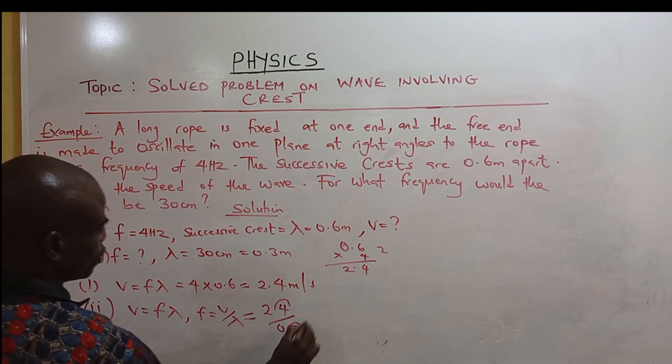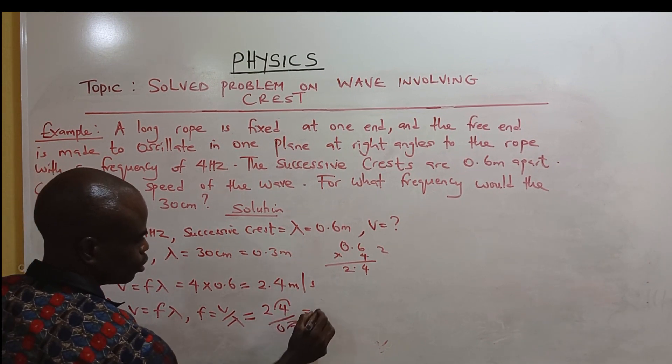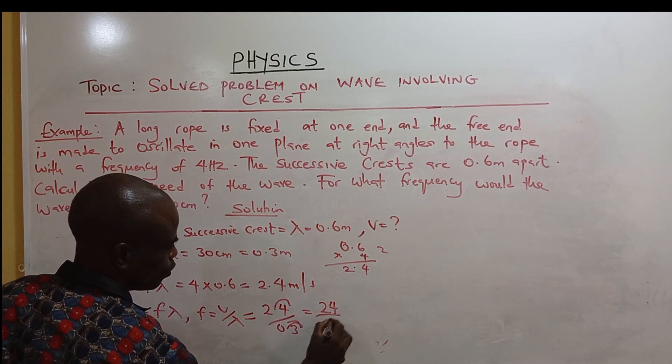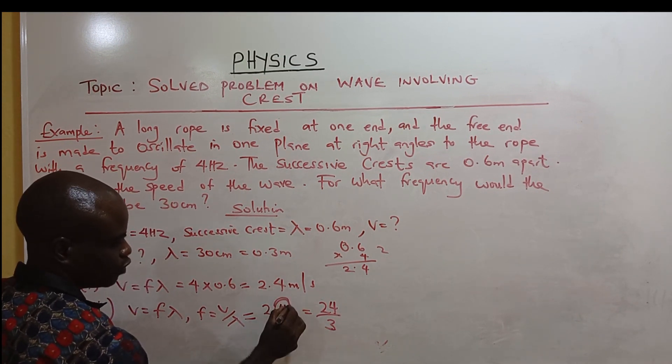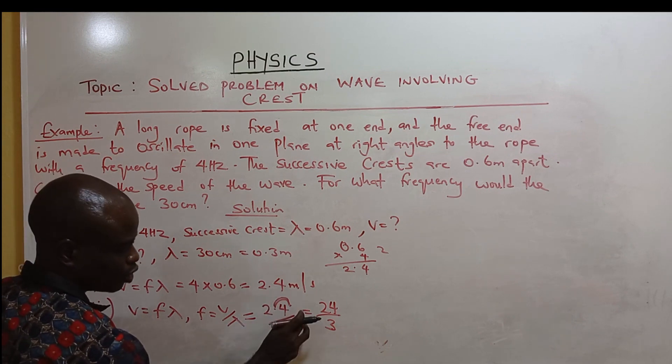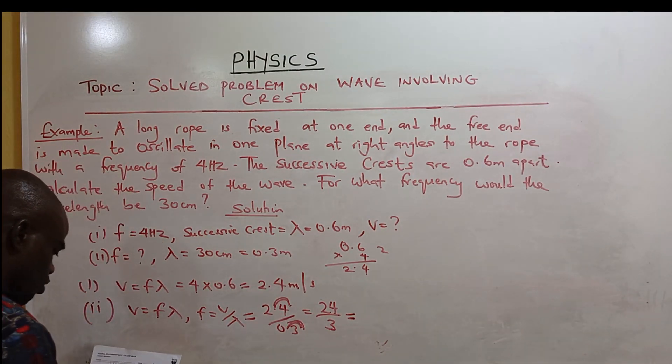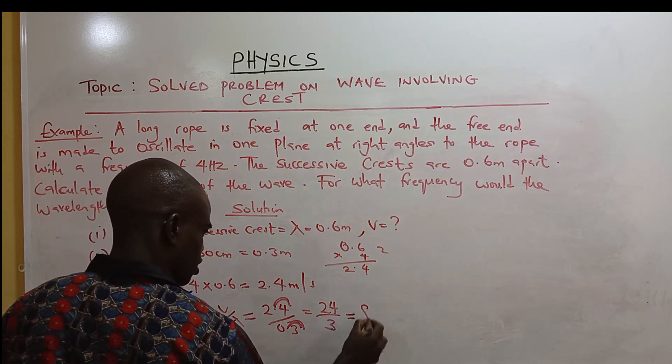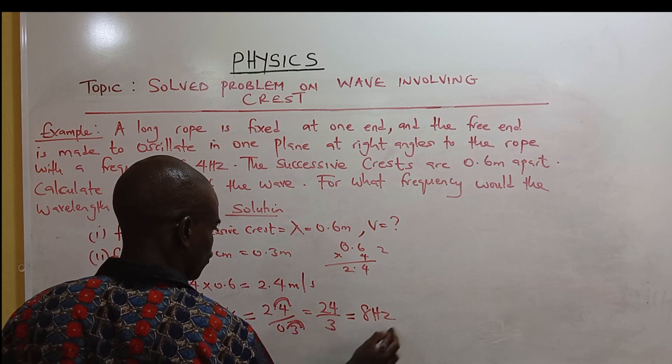We shift the decimal once. That may be 24 over 3. We shift decimal 1 on the 3 to remove the decimals. Now we divide it to get 8. 3 times 8 is 24.